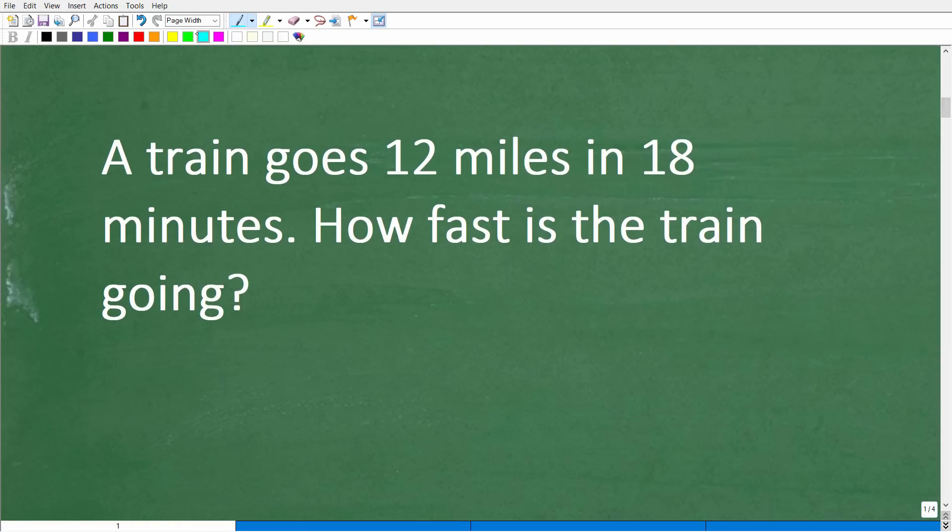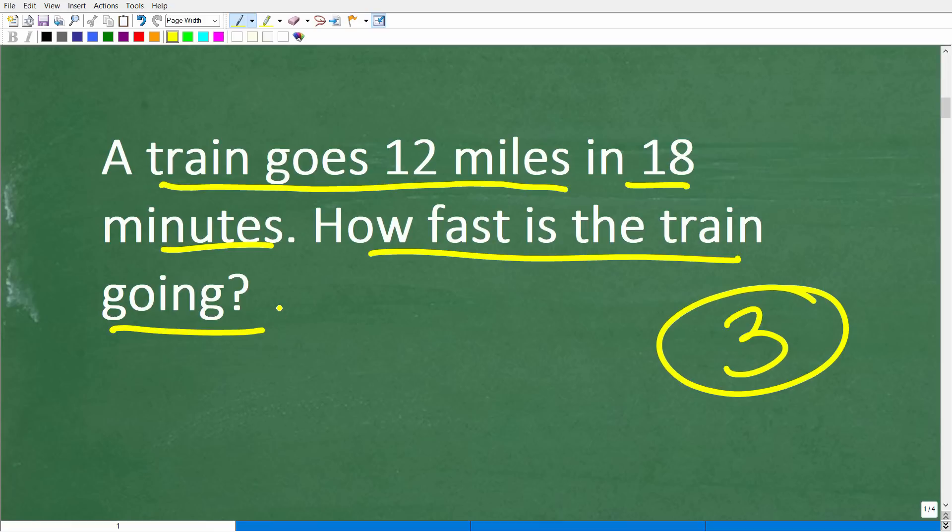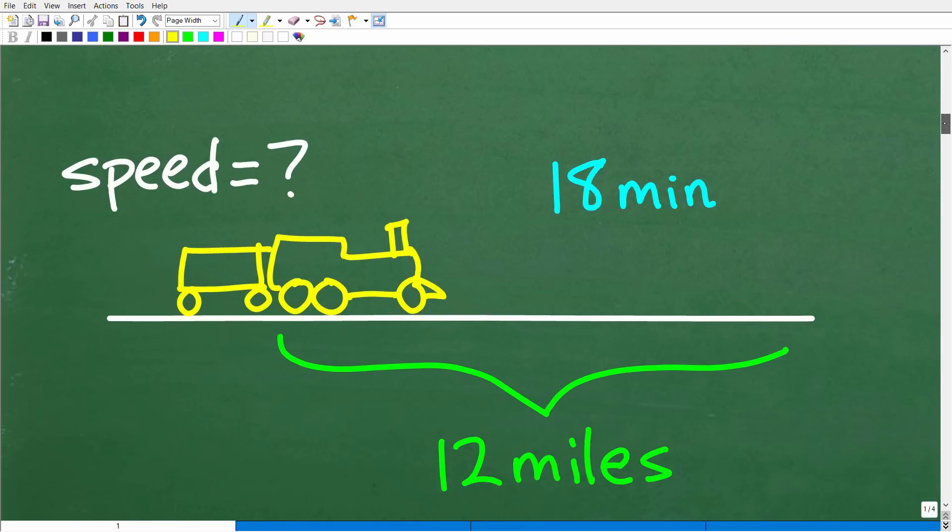All right, so first things first. First, we have a lovely math word problem. And you always want to use the rule of three when you solve any math word problem, and that is read the problem at least three times. Now, this particular problem is pretty straightforward, but you've got to be careful. Even with simple problems, you can oftentimes go too fast and then get confused, okay? You definitely don't want to confuse the information. So read the problem more than once. And then what you want to do is try to model this situation. So we have this train. It covers 12 miles in 18 minutes. So how fast is the train going?